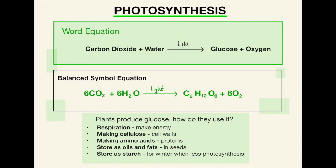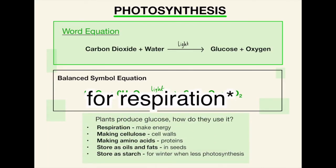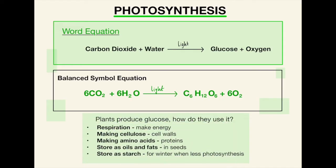Making cellulose for those cell walls which you should know in the plant cells. Making amino acids which they convert to proteins. Storing as oils and fats and storing as starch for the winter when they need to convert that back into glucose for photosynthesis when there's not as much sun. Those last three are probably a bit more higher based so foundation don't worry too much about those but definitely the first two will be useful.